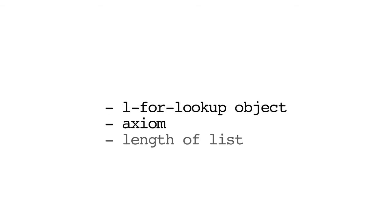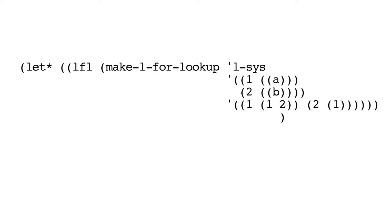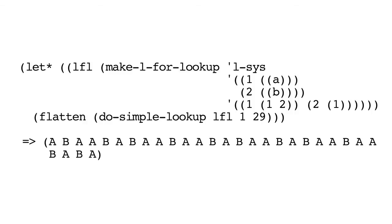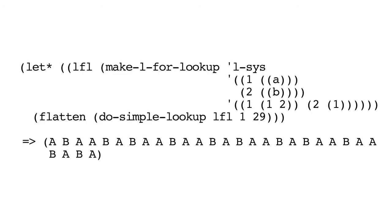The second method returns data associated with the keys, and this is do-simple-lookup. The arguments we need here are the L-for-lookup object to access, the starting axiom, and the length of the list to return. You can see we have our L-for-lookup object and a call to do-simple-lookup using that object, starting with an axiom of 1 and requiring 29 results to be returned. Here you can see that the 1's and 2's have been substituted into A's and B's. Notice also that we're calling the flatten function, which is useful for taking any list that consists of sub-lists and making them all into a simple list.